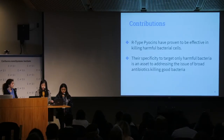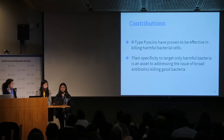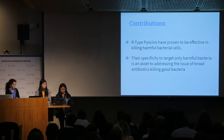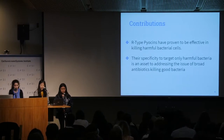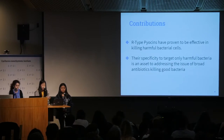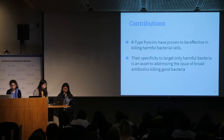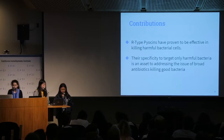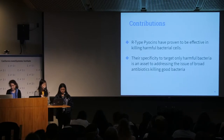R-type Pyocins have proven to be effective in killing harmful bacterial cells. In many cases, a single R-type bacteriocin is sufficient to kill a bacterial cell. Their specificity to target only harmful bacteria helps address the issue of broad-spectrum antibiotics killing the good ones. Although P. aeruginosa R-type Pyocins kill mainly strains of P. aeruginosa, they have also been shown to kill some strains of Haemophilus, Myrissa, and Campylobacter species.